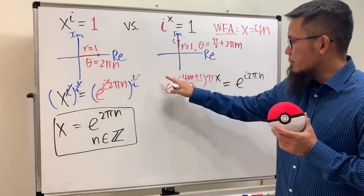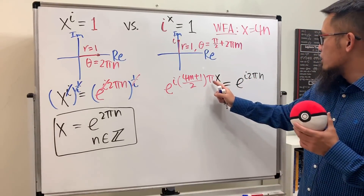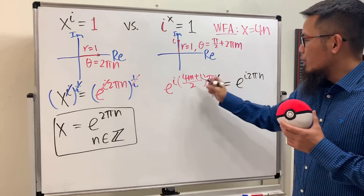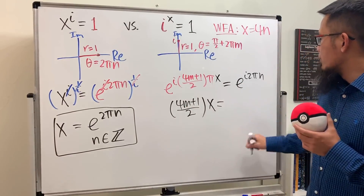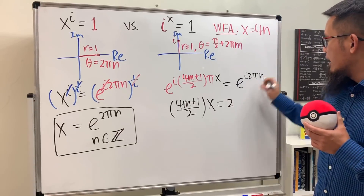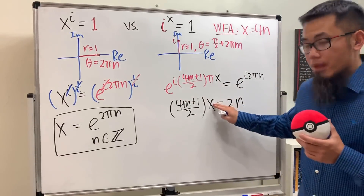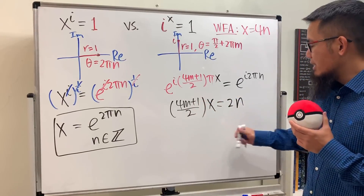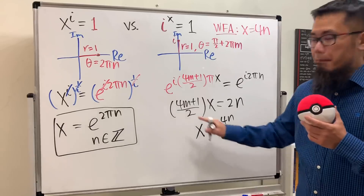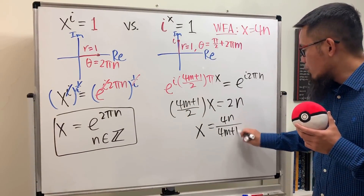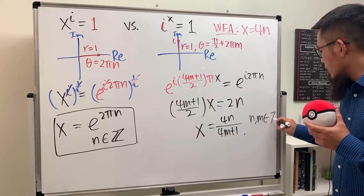Because we consider all cases, we can cancel the e's, and cancel the i's and π's. We're left with (4m+1)/2 · x equals 2n. Solving for x by multiplying by the reciprocal, it looks like x equals 4n divided by (4m+1), where n and m are integers.